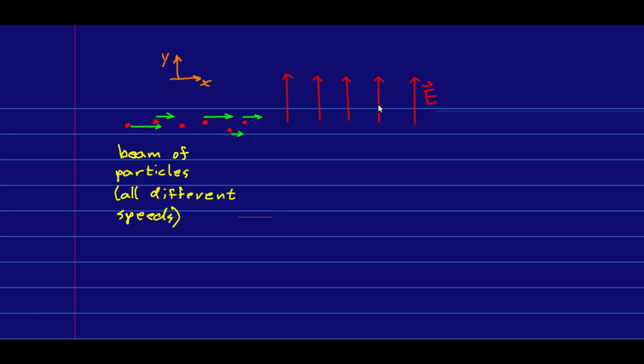So these particles have an electric force on them which is acting up if they're positive charges. And so we need a magnetic force down on them for them to be able to pass through this region and have those forces cancel out.